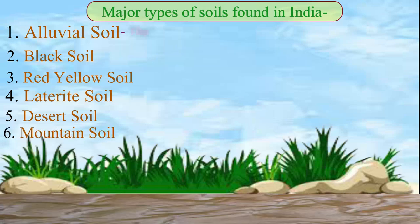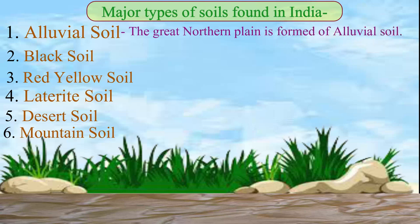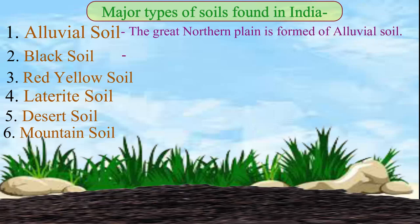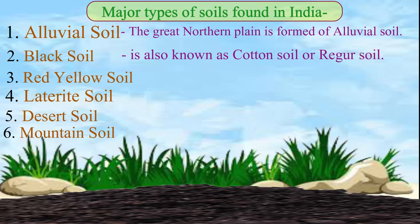The Great Northern Plains are made of Alluvial soil. Black soil is also known as cotton soil or regur soil.